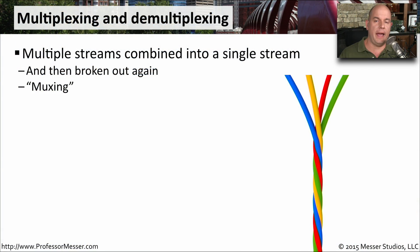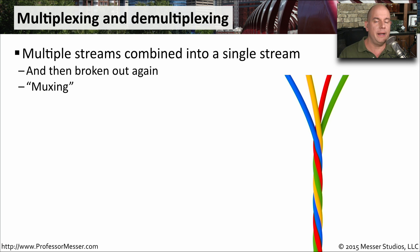One of the challenges we have when communicating from device to device is there's usually a single link between point A and point B. But we may be sending many different types of data and many different streams of information between those two devices. One way to maintain these multiple streams is to do something called multiplexing and demultiplexing.